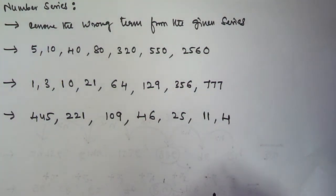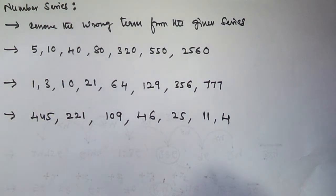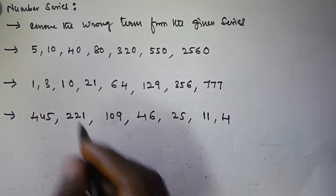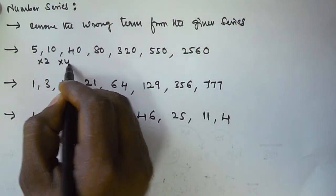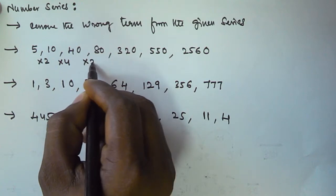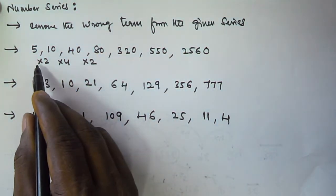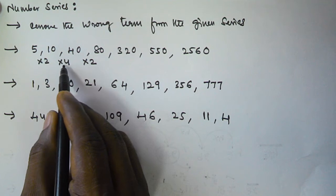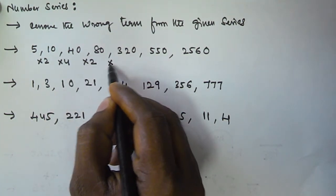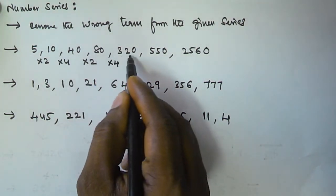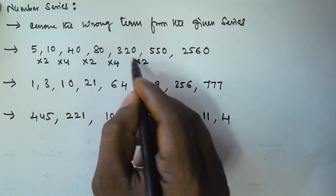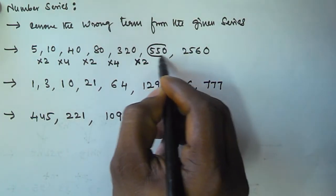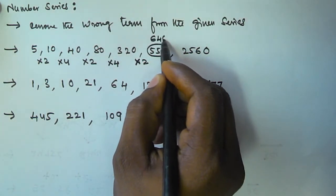We have to remove the wrong term from each series. If you observe the first series: 5 x 2 is 10, and 10 x 4 is 40, and then 40 x 2 is 80. So the series alternates: first multiply by 2, then multiply by 4. So that gives 320, and then multiplying with 2 you should get 640, but here we have 540.